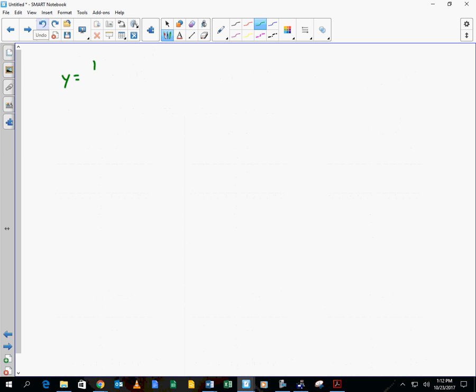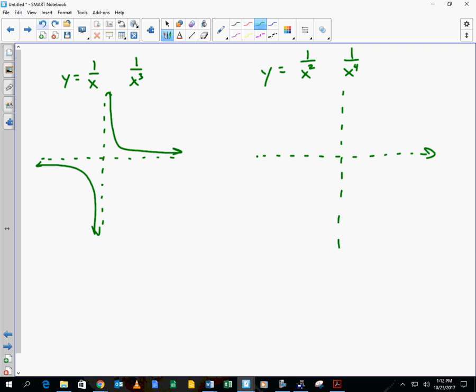If you have y equals 1 over x or 1 over x cubed, then that's a reciprocal function where we had graphs that look like this. Remember that? And if we had y equal to 1 over x squared or 1 over x to the 4th, then how did that change? Do you remember? Yeah, the bottom one flipped up. Why? Because if you square a negative, you get a positive, exactly. So that's where we're sitting here.